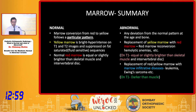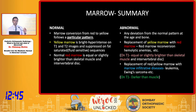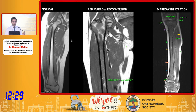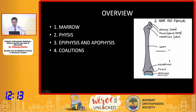Summarizing the marrow changes: any deviation from the normal pattern at that particular age and site. Replacement of yellow marrow with red marrow — seen in red marrow reconversion states — on T1 images shows signal intensity brighter than the muscle or adjacent disc. If it is darker on T1 images than the adjacent muscle or disc, then it is a marrow-replacing disorder — marrow infiltrative disease like lymphoma, leukemia, etc.